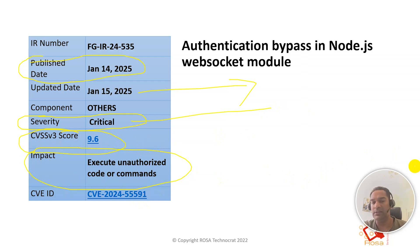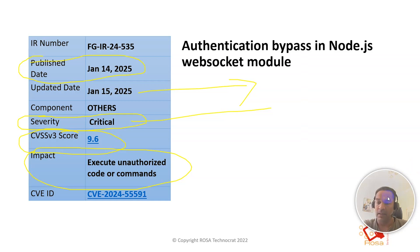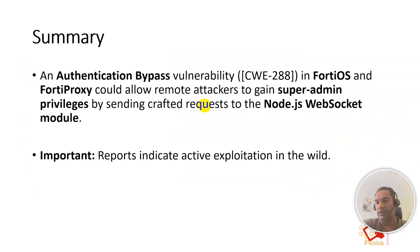The attacker can execute unauthorized code or commands and can impact your device in production, which might have a severe impact on your network or device. This could result in denial of service — for example, the firewall may go down — or the attacker could gain super admin access to the device itself.